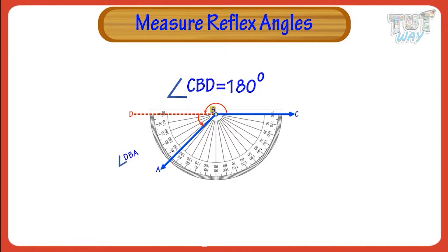The baseline of the protractor is along the arm DB of the angle. We will use the outer scale to measure angle DBA, as the arm DB passes through the zero of the outer scale.